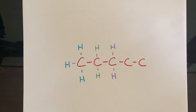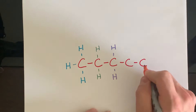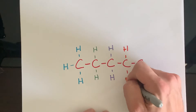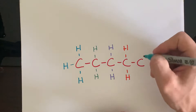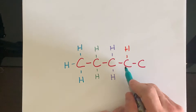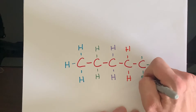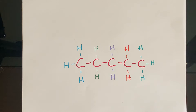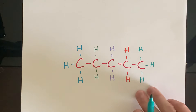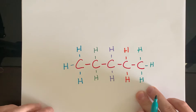Moving on to carbon number four — same exact thing as carbon two and carbon three. We got one, two bonds, so we're going to add two more hydrogens. And then our last one, all the way on the right side, carbon number five — we got only one bond to carbon number four, so we're going to need one, two, three. And there is our hydrocarbon completely done with four bonds on every single one of the carbons. It doesn't get more difficult than that with straight chains.